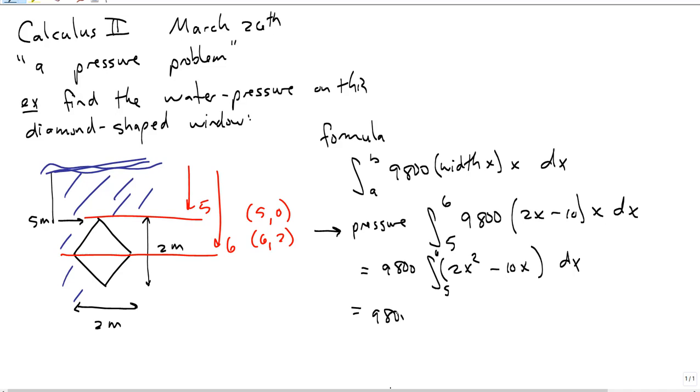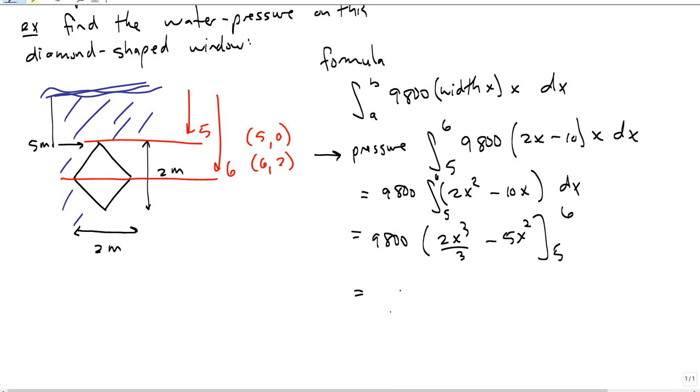And so, this is 9,800 times 2x cubed over 3 minus 5x squared, evaluated from 5 to 6. So this is a total of 9,800 times 2/3 of 216 minus 5 times 36, minus 2/3 of 125 minus 125. The units would be newtons.